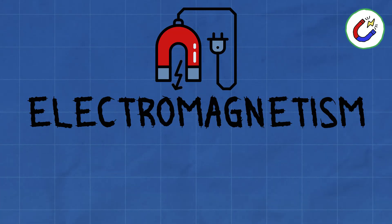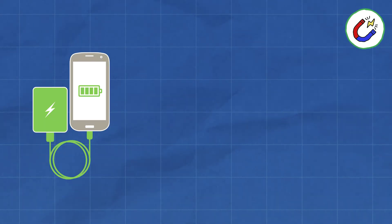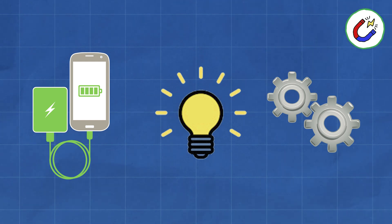Electromagnetism is responsible for a whole lot of cool stuff in our everyday lives. It's the reason your phone charges, lights turn on, and even how motors and generators work.